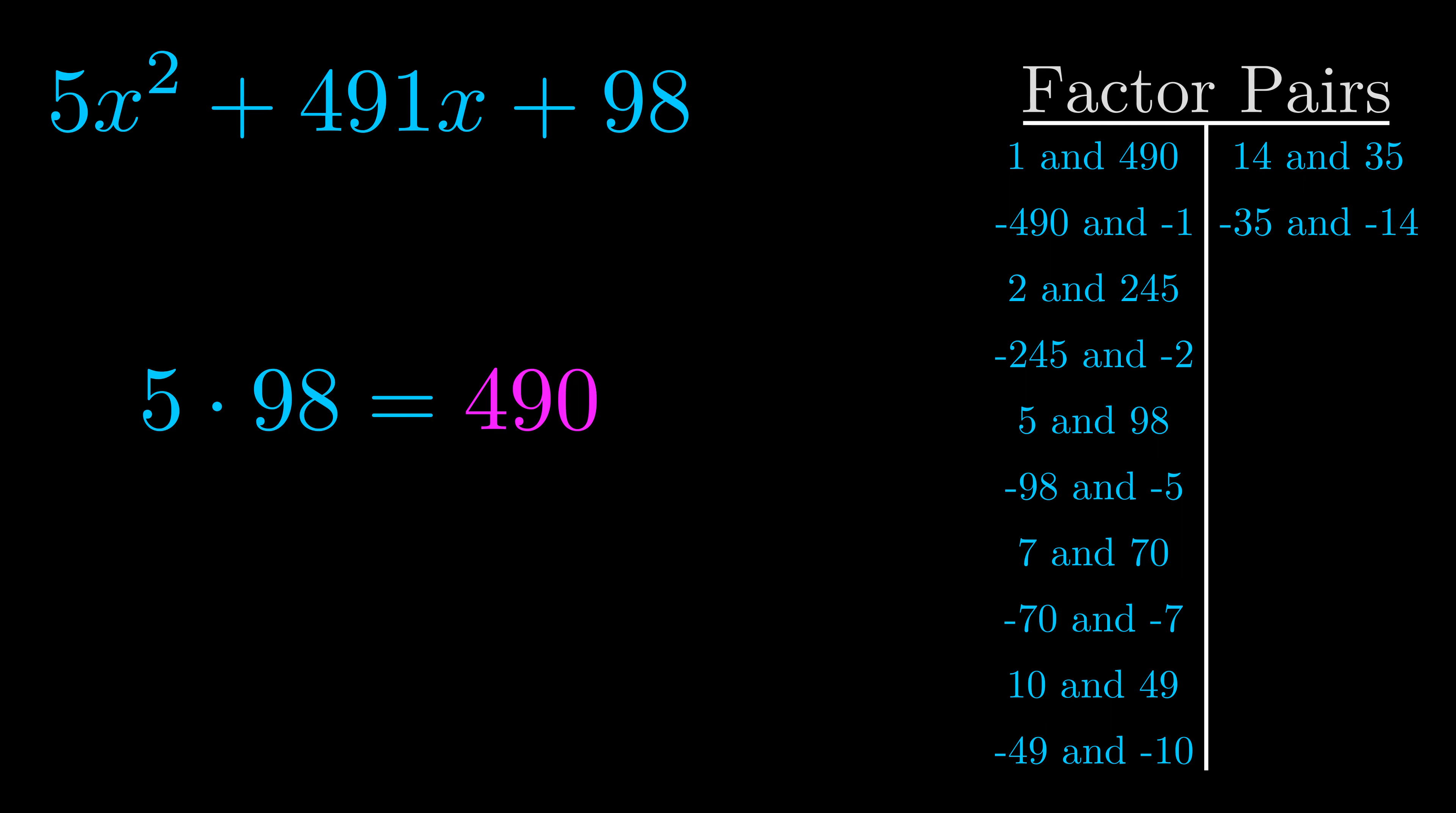The b value is the coefficient on the x term. That's the middle term, the one that we haven't done anything with yet. And really this is the only factor pair that we need.